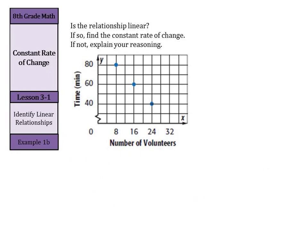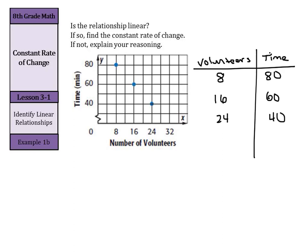So let's have our volunteers and let's compare that to our time. Well, when our number of volunteers was 8, that's 80 minutes. 16 was 60 minutes. 24 was 40 minutes. We don't have anything for 32. Right now as I look at this, it looks like this went up by 8 and this went up by 8, where this went down from 80 to 60 by 20 and this went down by 20.